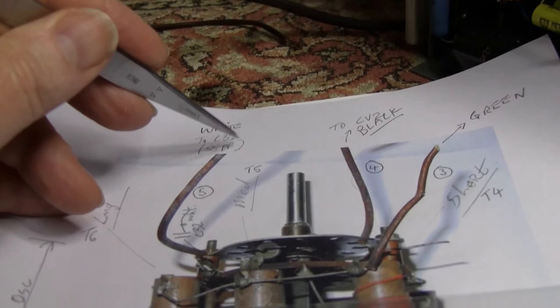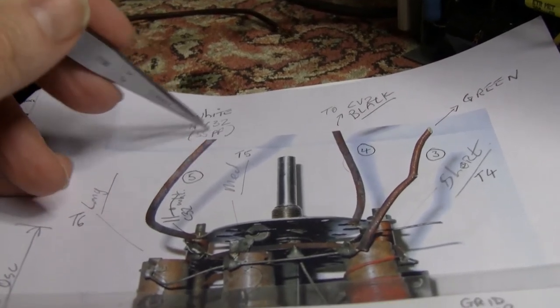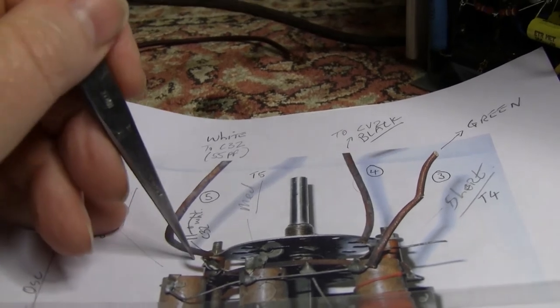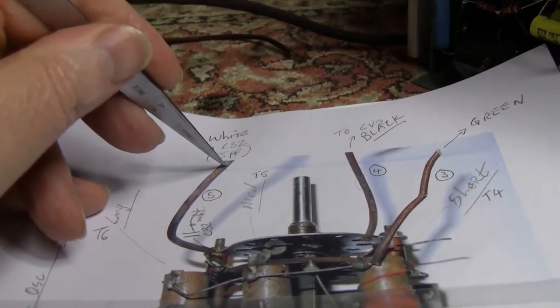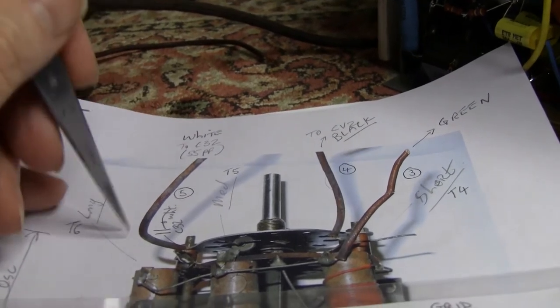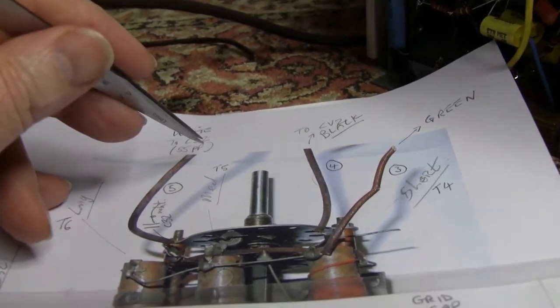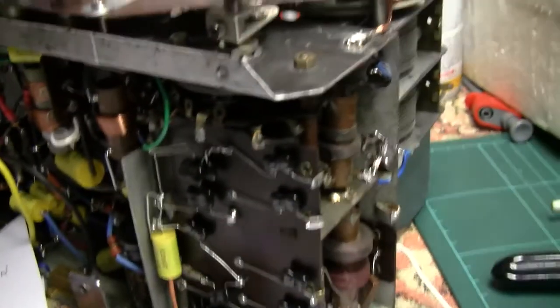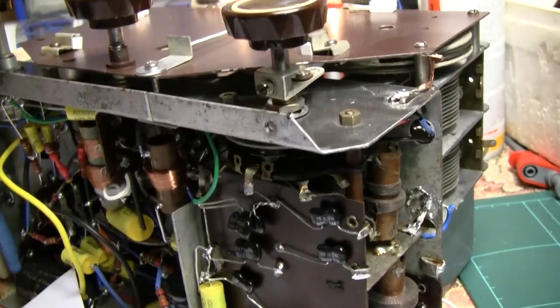So the fact that that capacitor was, I don't know, two inches further away from the valve than it should have been, meant that oscillator wouldn't work. So I put the capacitor right on the valve, and then ran the wire back. And we have, we have shortwave.